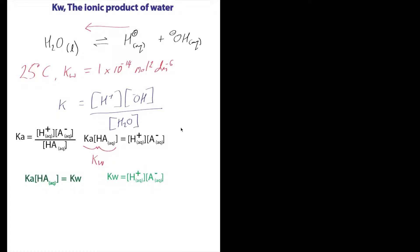This tutorial carries on from where we left off with Kw, which is the ionic product of water. If you've not seen that tutorial, I urge you to have a quick look at it - it introduces this new term Kw, which is basically the concentration of the acid multiplied by the concentration of the base in solution.